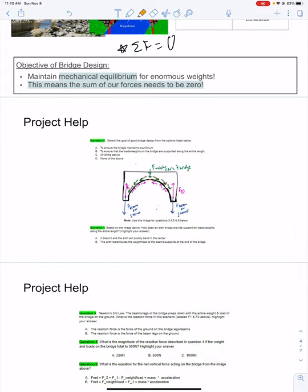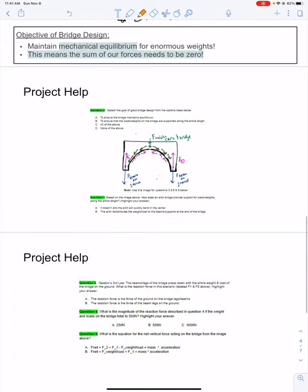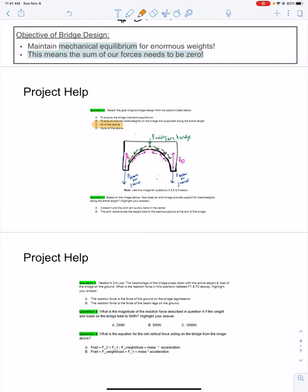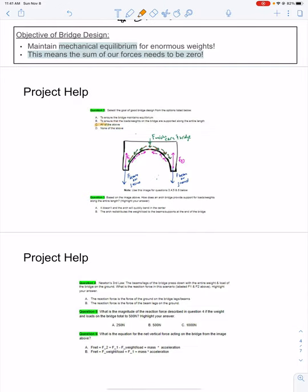For your homework assignment, let's go through the questions. Select the goal of a good bridge design from the options listed: to ensure that the bridge maintains equilibrium, that sounds right; to ensure that the weights and loads of the bridge are supported along the entire length, yep. C is all of the above and D is none of the above. So I'm thinking that C is correct. We are looking at making sure that we are in mechanical equilibrium and that no matter where we are on the bridge, our bridge is supported.